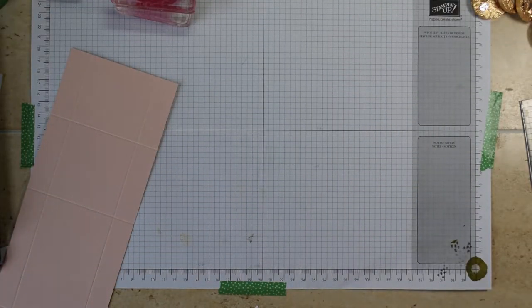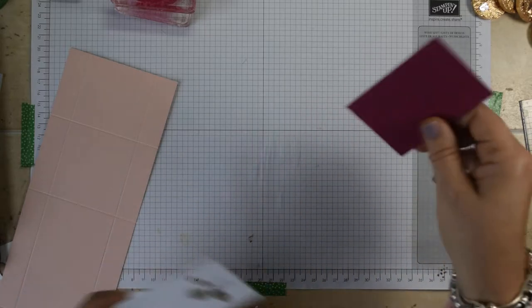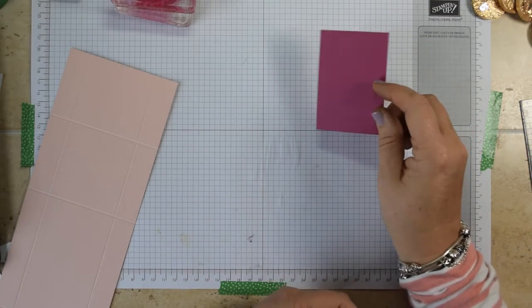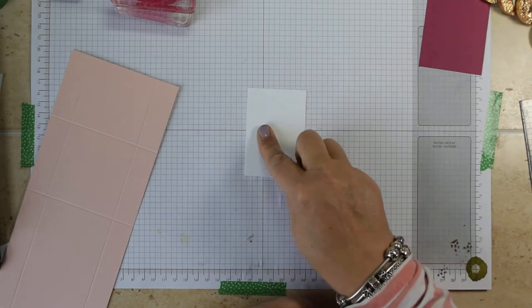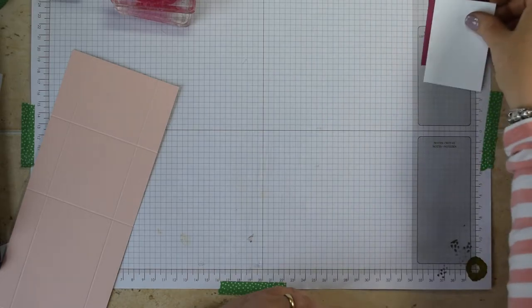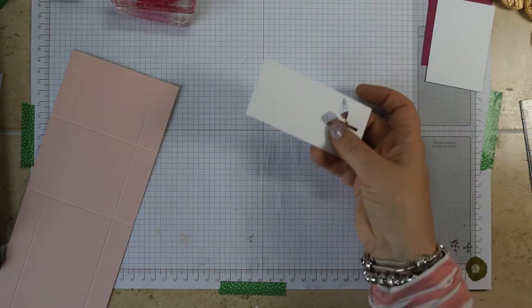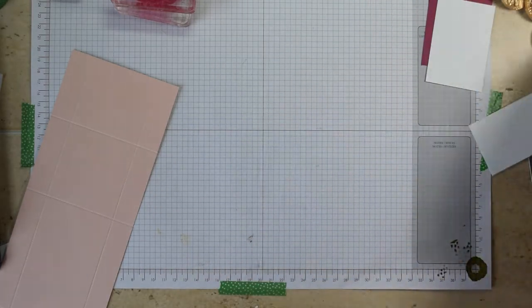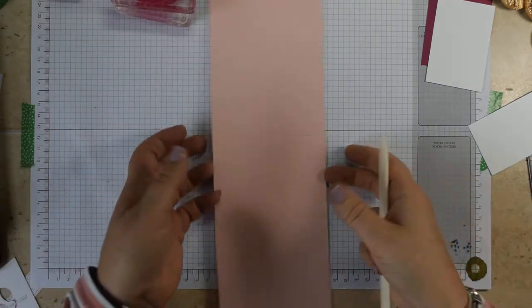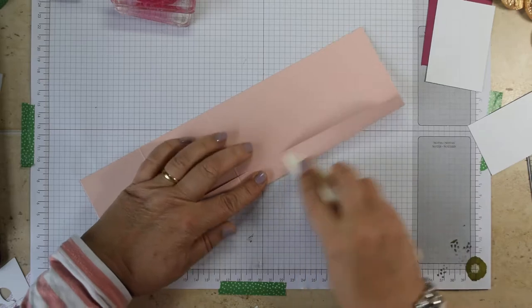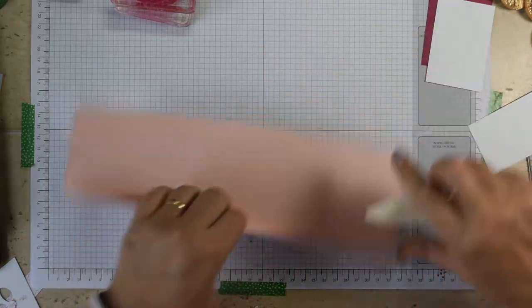You'll also need to cut yourself a piece of Berry Burst cardstock and this is 6 by 8.5 centimeters, and a piece of Whisper White which is 5.5 by 8 centimeters for stamping on, and you'll need a scrap of Whisper White for stamping and punching the leaf as well. So once you've got your cardstock, first thing is fold and burnish those score lines.